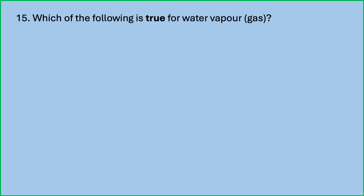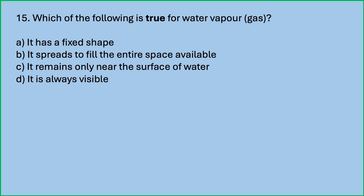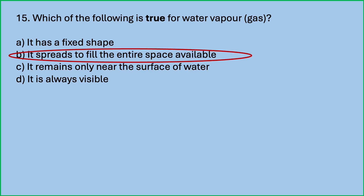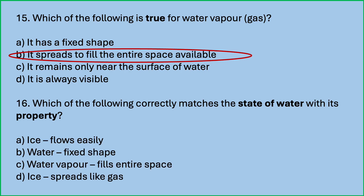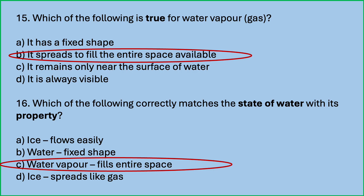Which of the following is true for water vapour or gas? It has a fixed shape; it spreads to fill the entire space available; it remains only near the surface of water; it is always visible. Which is the correct answer? It spreads to fill the entire space available. Gases do not possess a fixed shape — they spread out in the entire available space. Which of the following correctly matches the state of water with its property? Water vapour fills entire space — that is the correct answer.